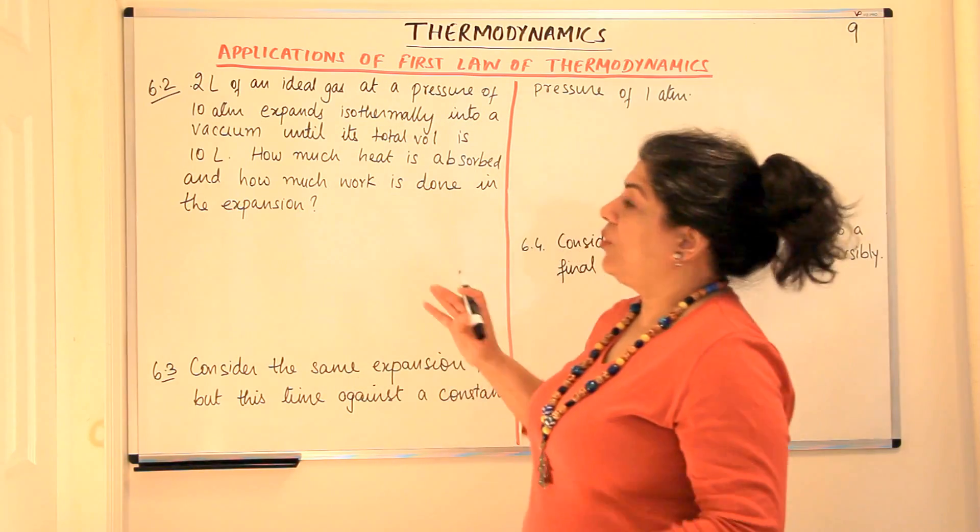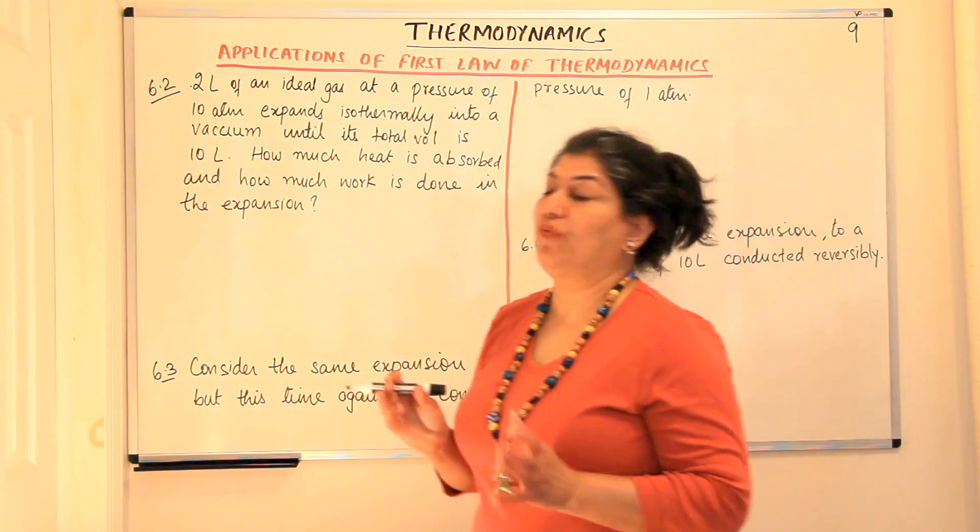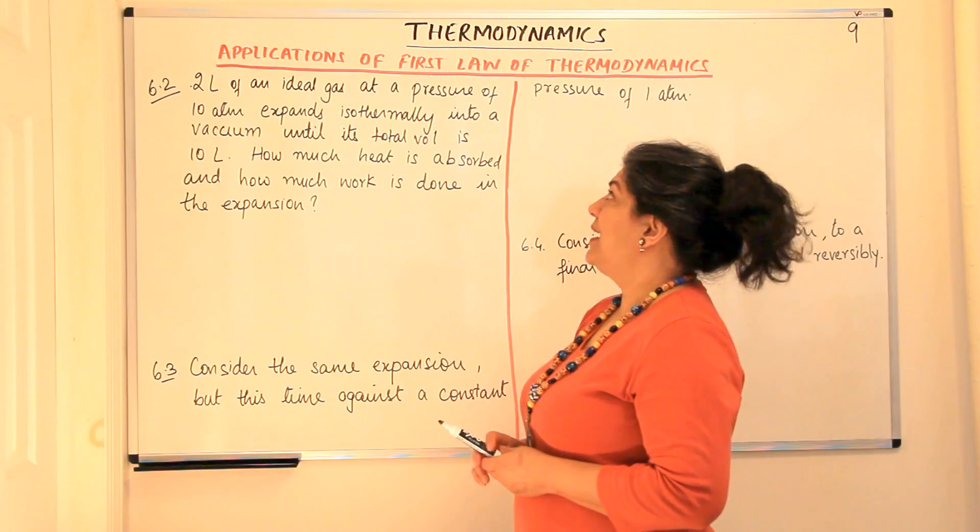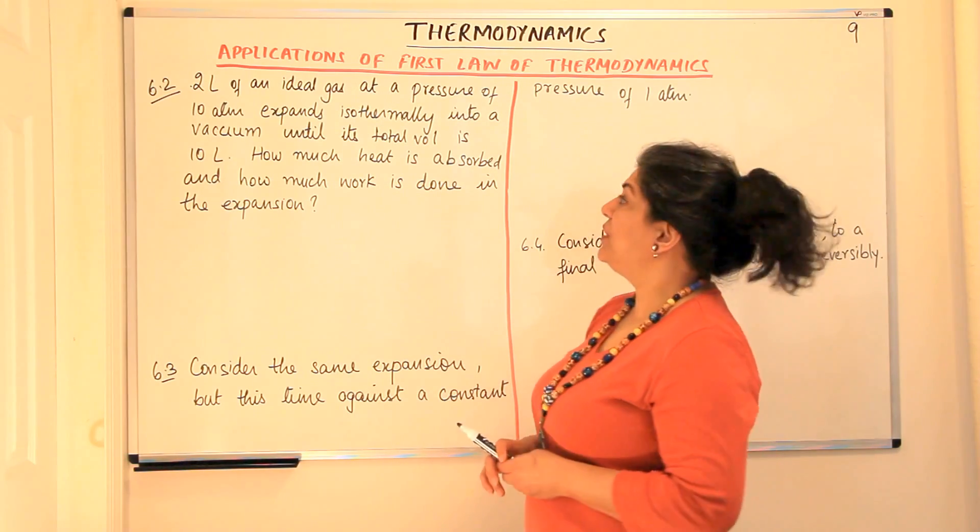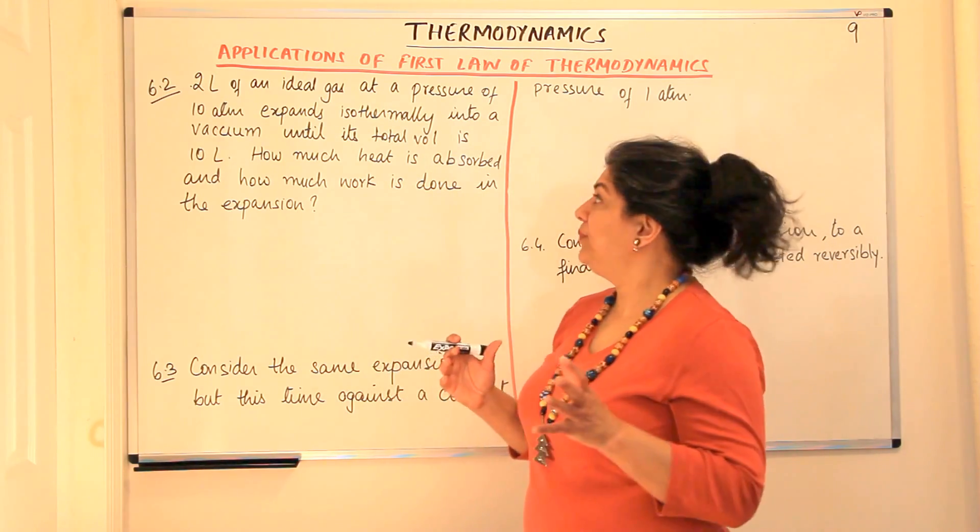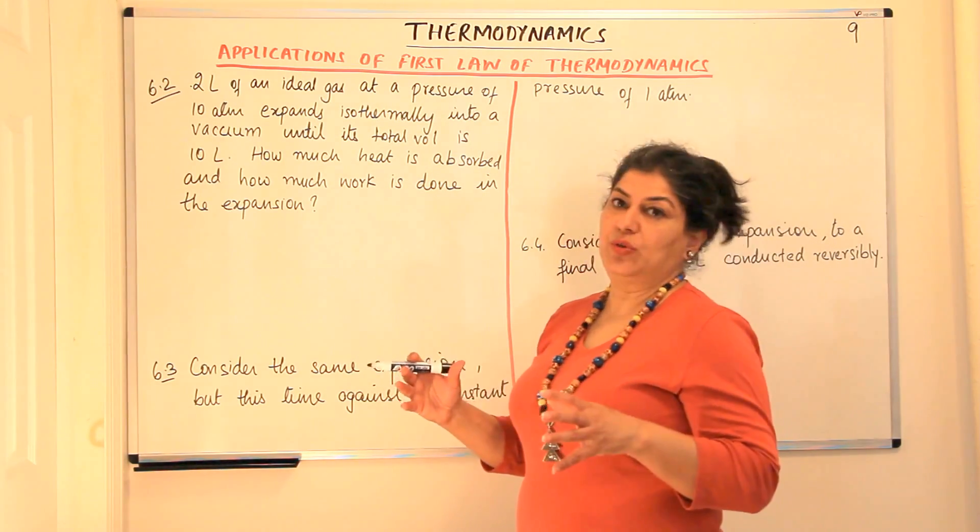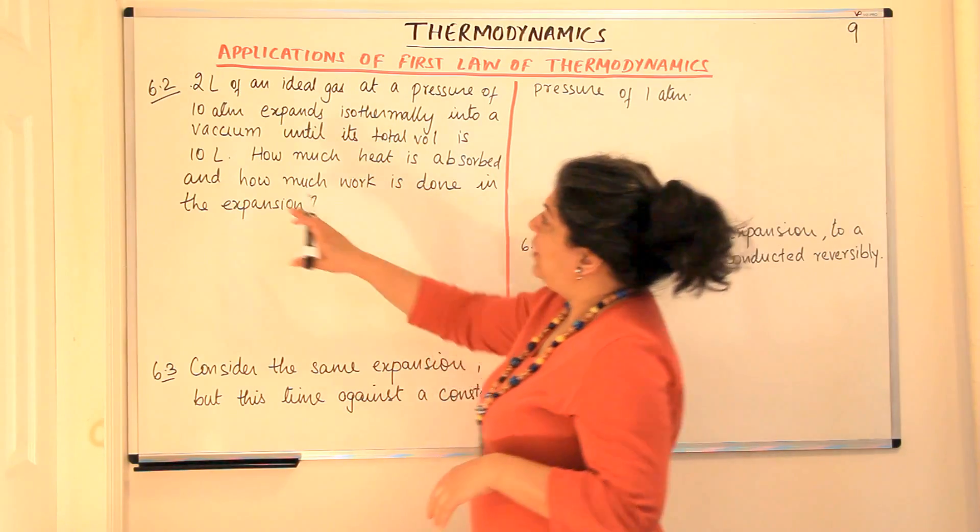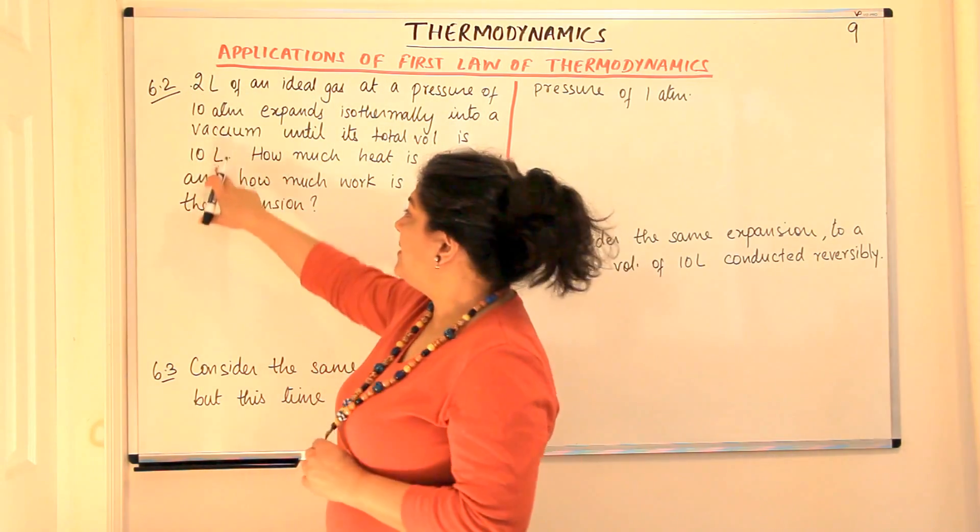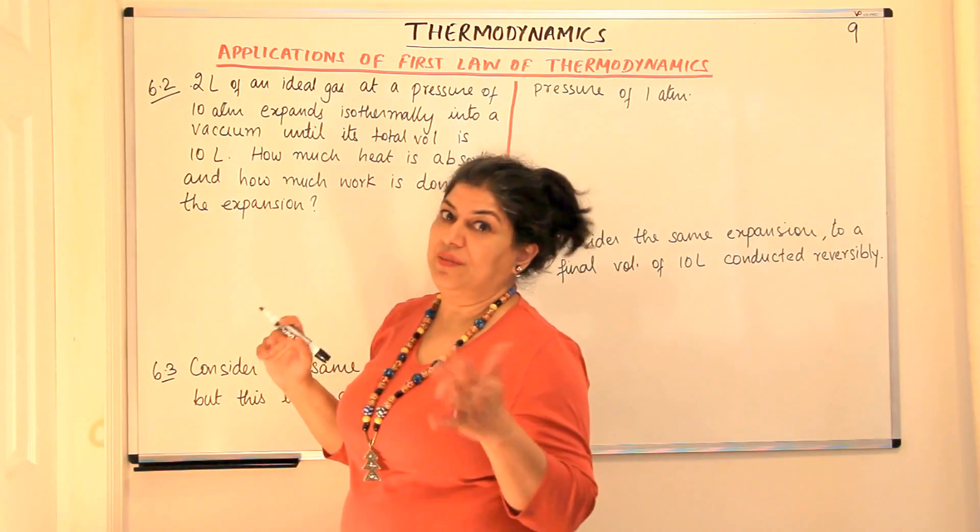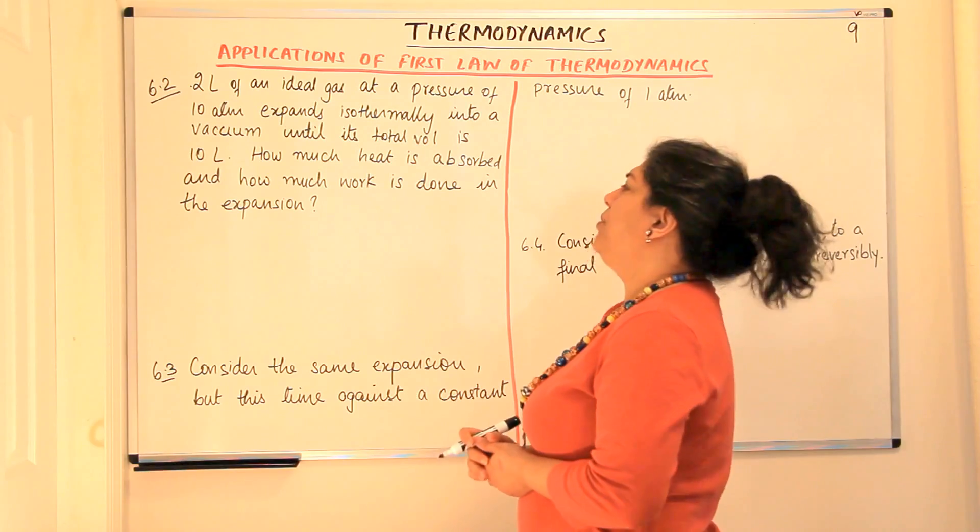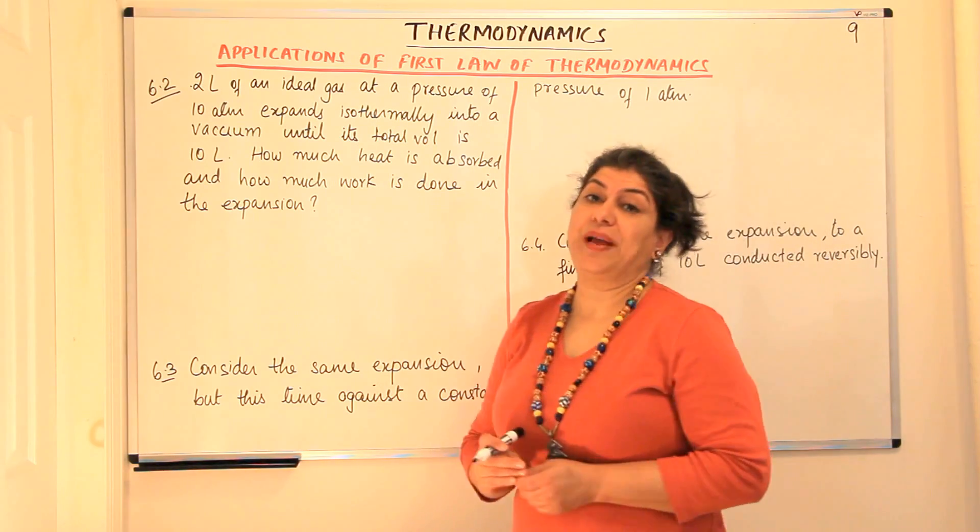So the first question, this is question 6.2 of your textbook. 2 liters of an ideal gas at a pressure of 10 atmosphere expands isothermally into a vacuum until its total volume is 10 liters. It means that 2 liters is V initial and 10 liters is V final, the final volume. How much heat is absorbed and how much work is done in the expansion?